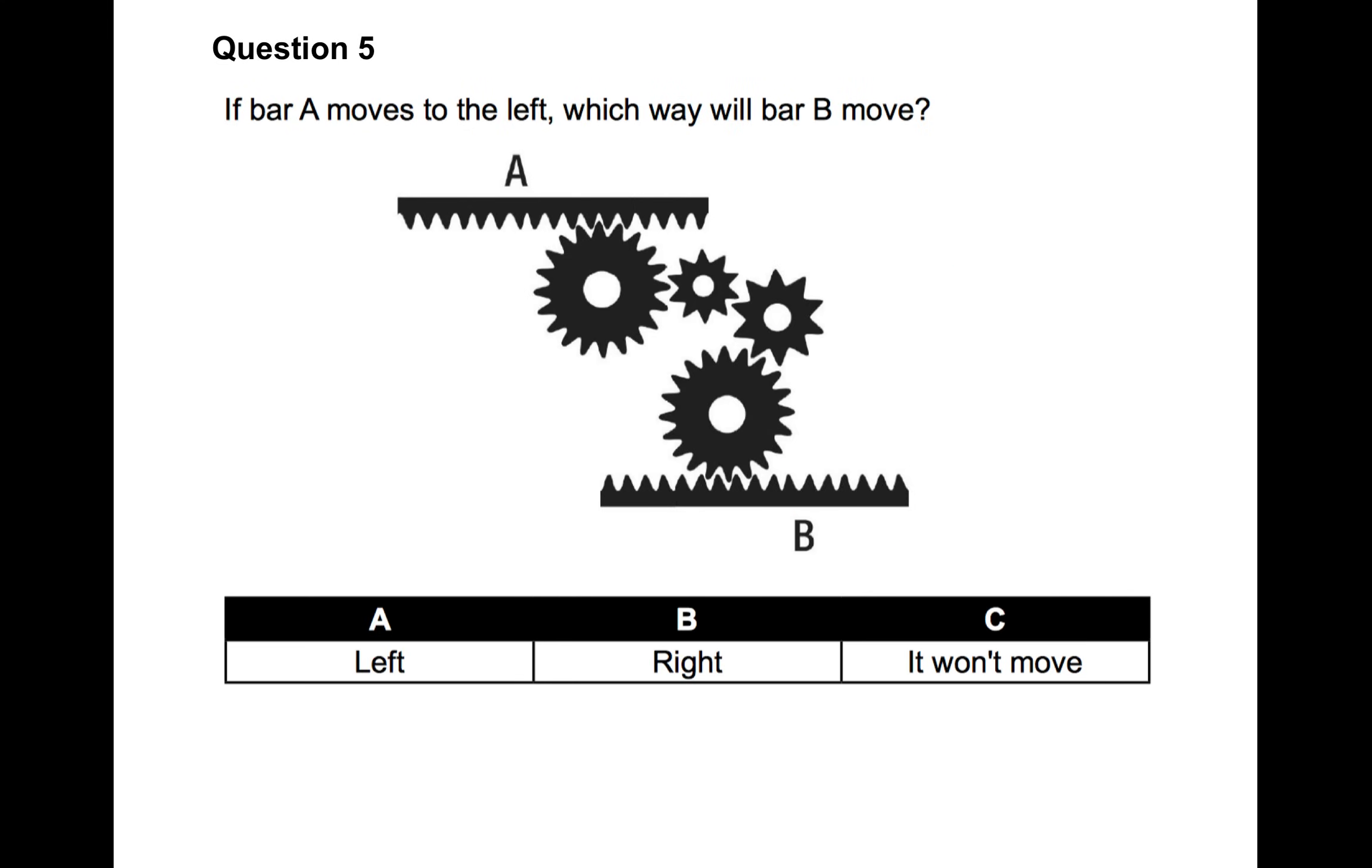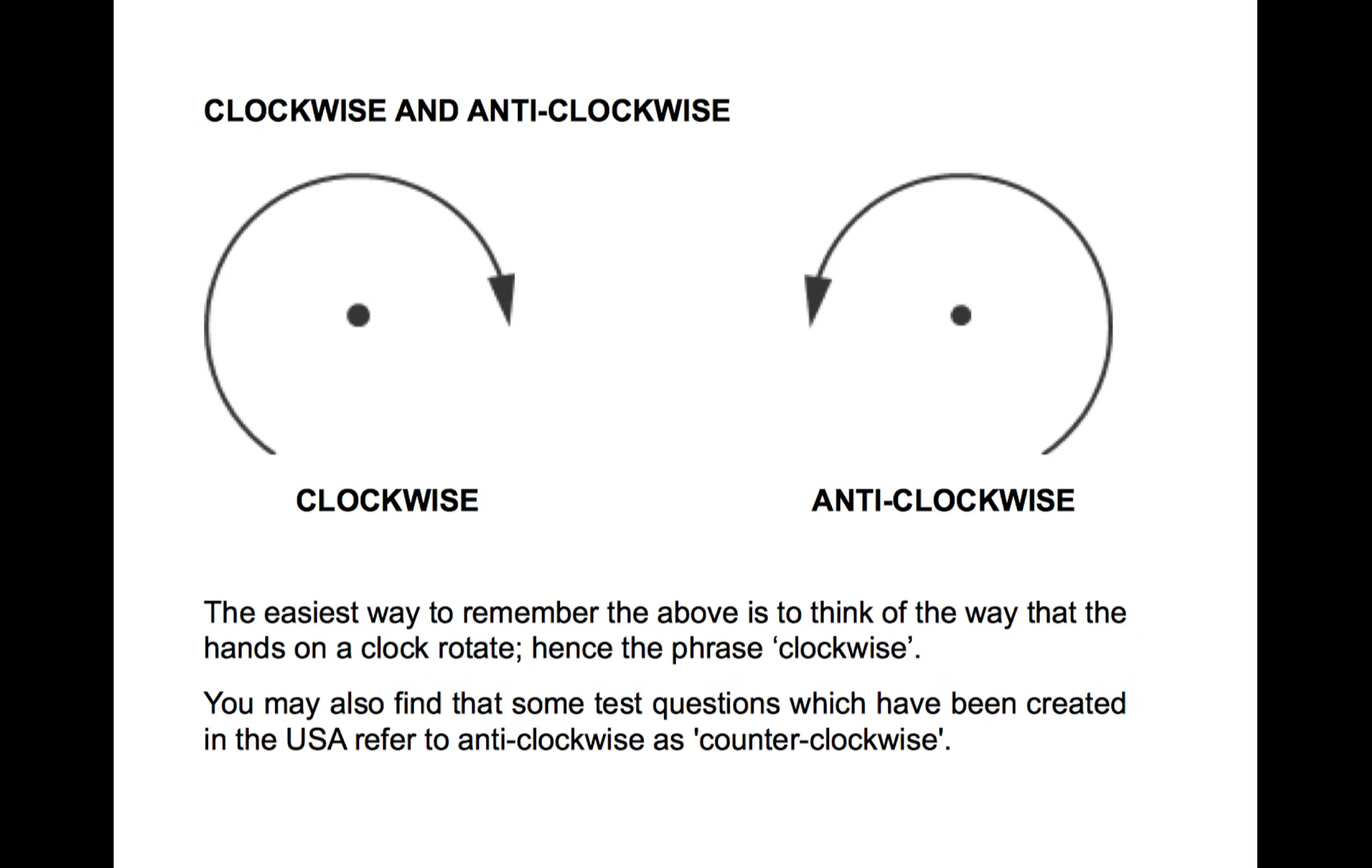Question number five. Now, this is where we get into cog type questions. If bar A moves to the left, which way will bar B move? So what you have to do is first of all, understand clockwise and anticlockwise. Really important. You've got to understand clockwise and anticlockwise. Now, most of you will understand this, some people won't. So clockwise is, as it suggests, moving the way that the hands of a clock would move, which is round to the right. Anticlockwise, or sometimes counterclockwise, as it is mentioned, will be moving to the left. So the easiest way to remember clockwise and anticlockwise is to think of the way that the hands on a clock rotate. And that's why it's called clockwise. So if you think the hands of a clock will rotate to the right, that's clockwise. And going the other way is anticlockwise. And basically, if you're in the USA, then sometimes they refer to anticlockwise as counterclockwise. So clockwise and counterclockwise.